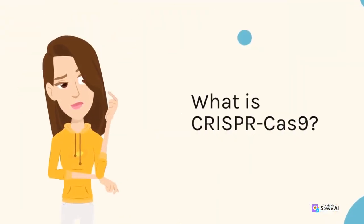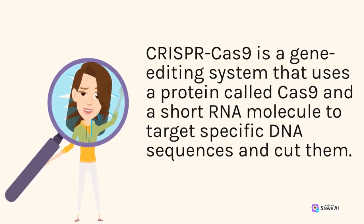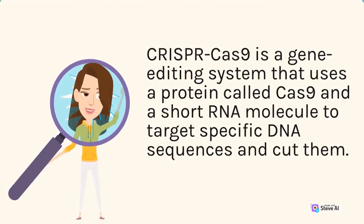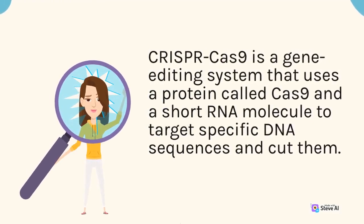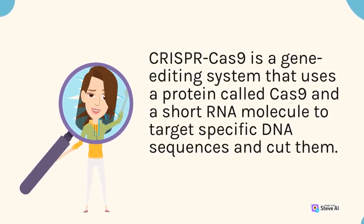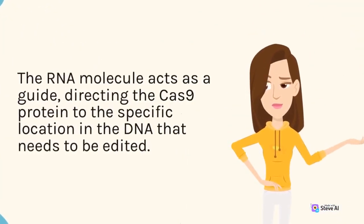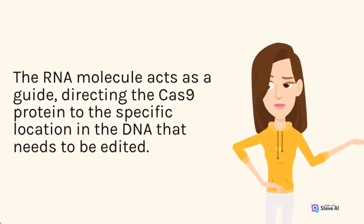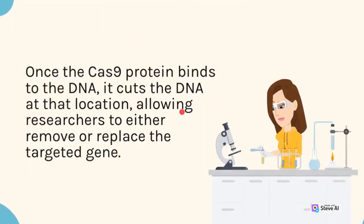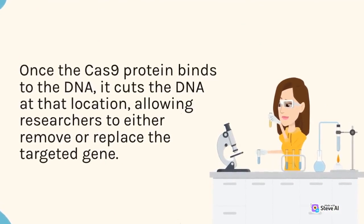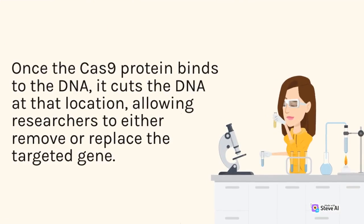CRISPR-Cas9 is a gene editing system that uses a protein called Cas9 and a short RNA molecule to target specific DNA sequences and cut them. The RNA molecule acts as a guide, directing the Cas9 protein to the specific location in the DNA that needs to be edited. Once the Cas9 protein binds to the DNA, it cuts the DNA at that location, allowing researchers to either remove or replace the targeted gene.